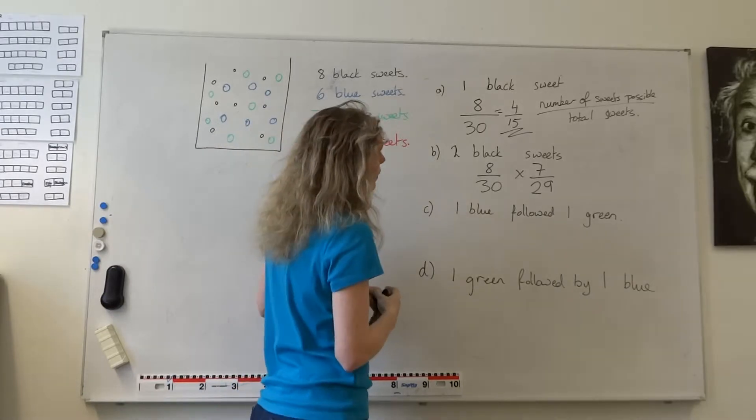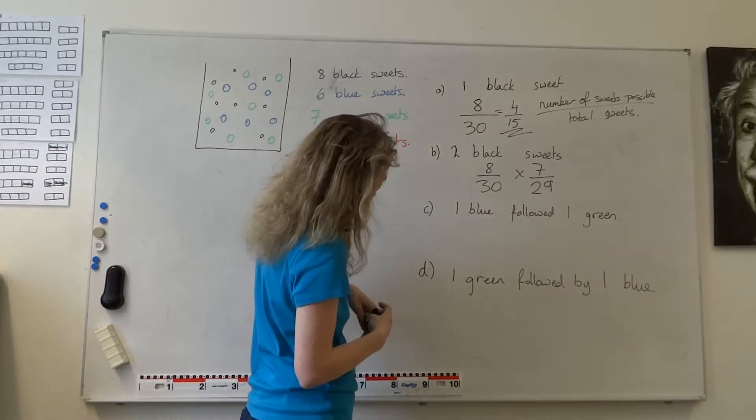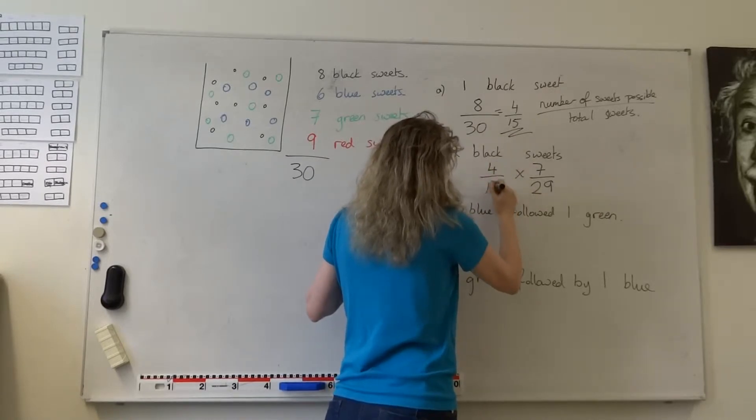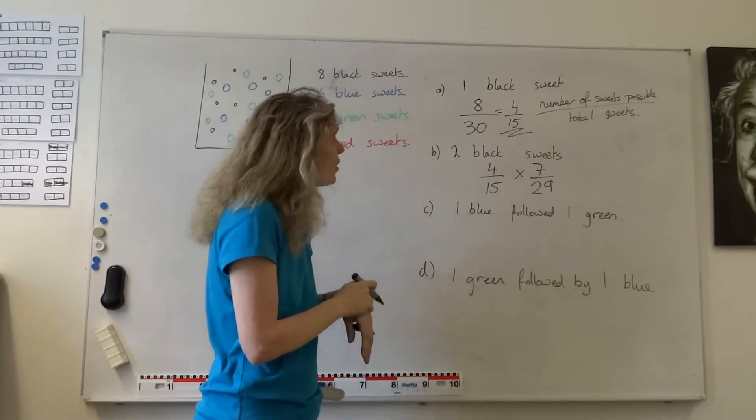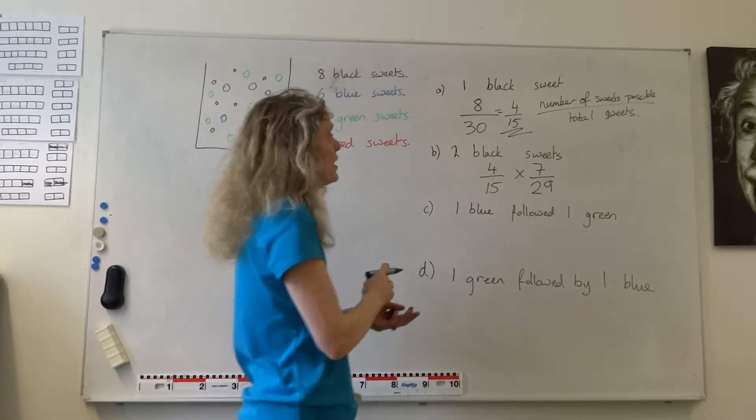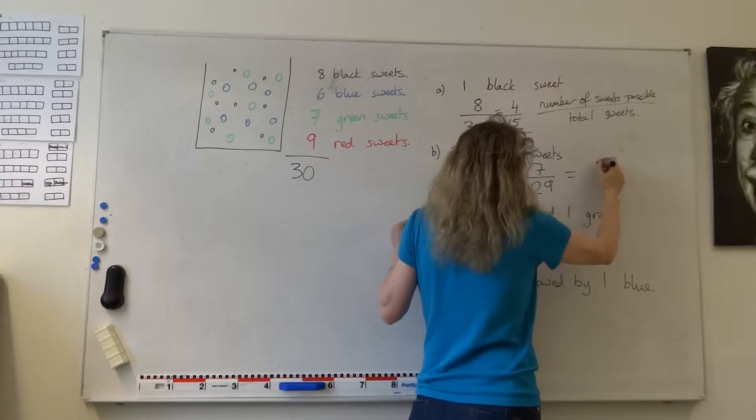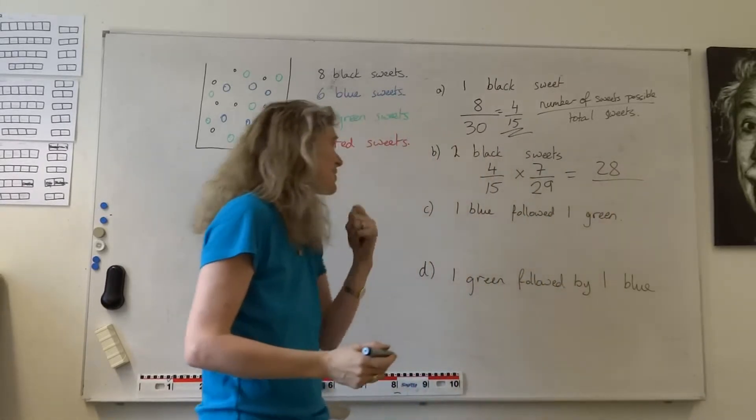So we would have to see if we could simplify those. We could change 8 thirtieths to 4 fifteenths. And then there's really not very much we can do to simplify that anymore. So we'd just have to multiply through. 4 times 7, 28.